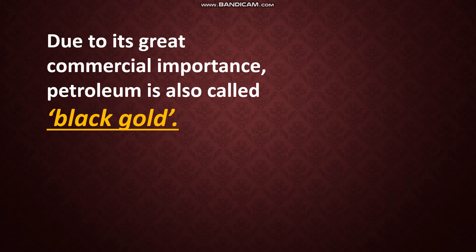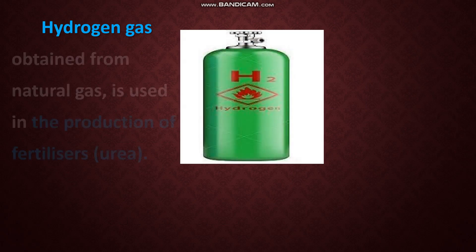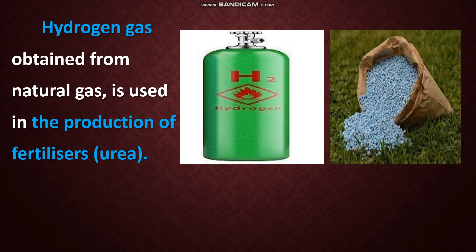Because of its great commercial importance, petroleum is also called black gold. Just as gold is very precious, petroleum is used for many purposes. Hydrogen gas, which is obtained from natural gas, is used in the production of fertilizers like urea.